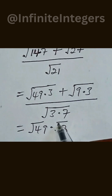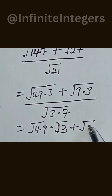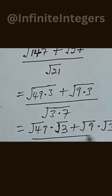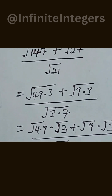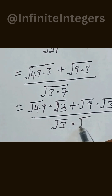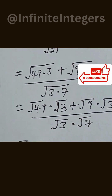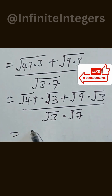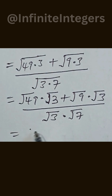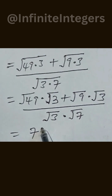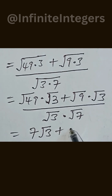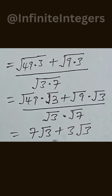This is equal to square root of 49 multiplied by square root of 3, plus square root of 9 multiplied by square root of 3, all over square root of 3 multiplied by square root of 7. And square root of 49 equals 7, multiplied by square root of 3, plus square root of 9 equals 3, multiplied by square root of 3, all over square root of 3.